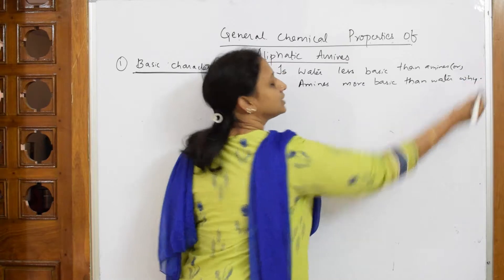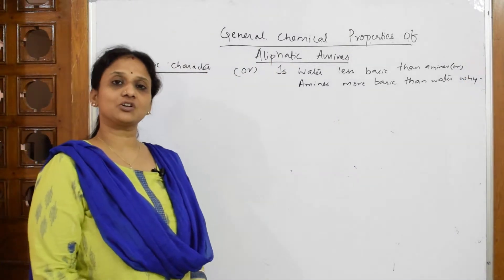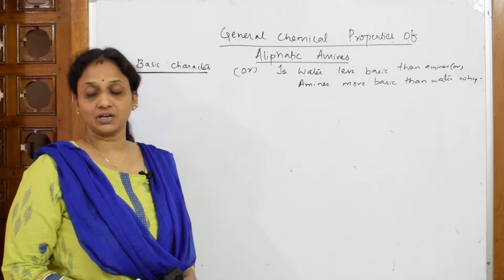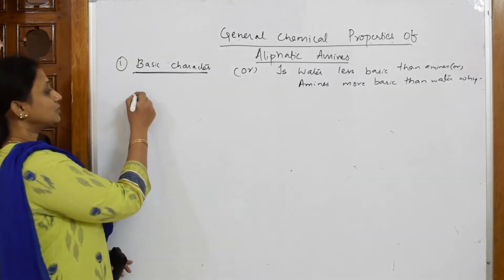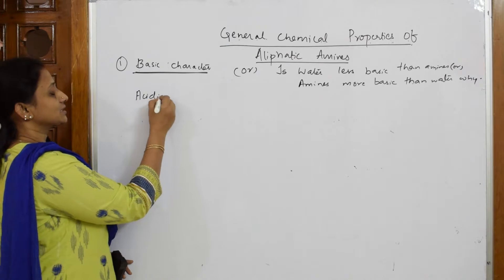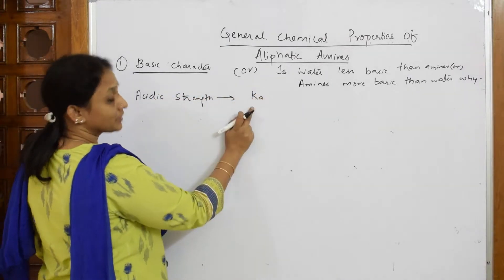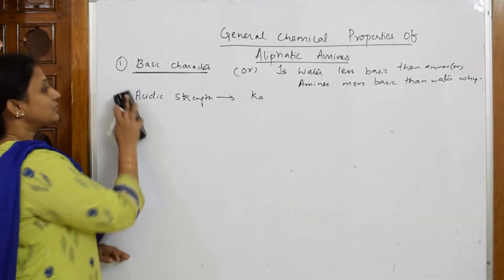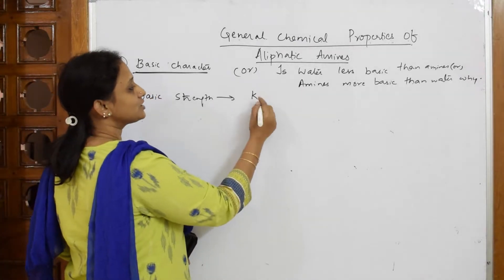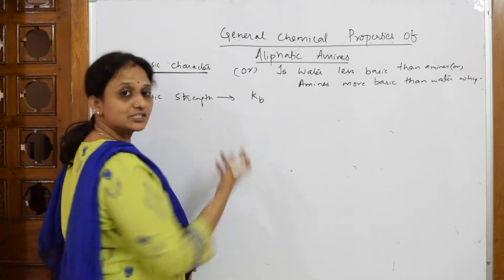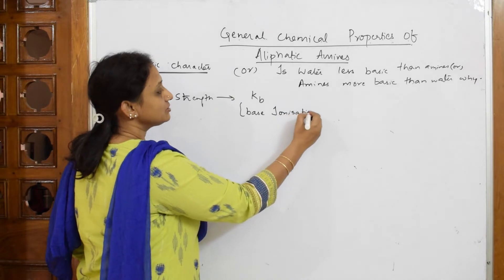Why are amines more basic than water? Yes — let us reason the question. Whenever basic nature or basic strength is explained, we explain it in terms of two important things. For acidic strength, we use Ka — the acid ionization constant. Since we are explaining basic strength, we use Kb — the base ionization constant.